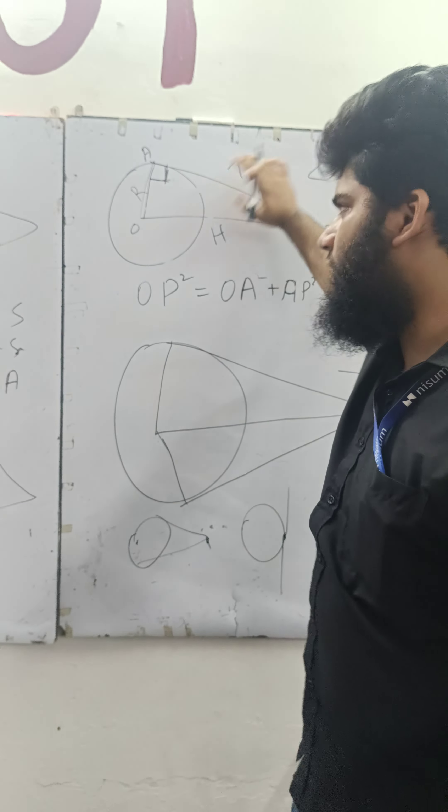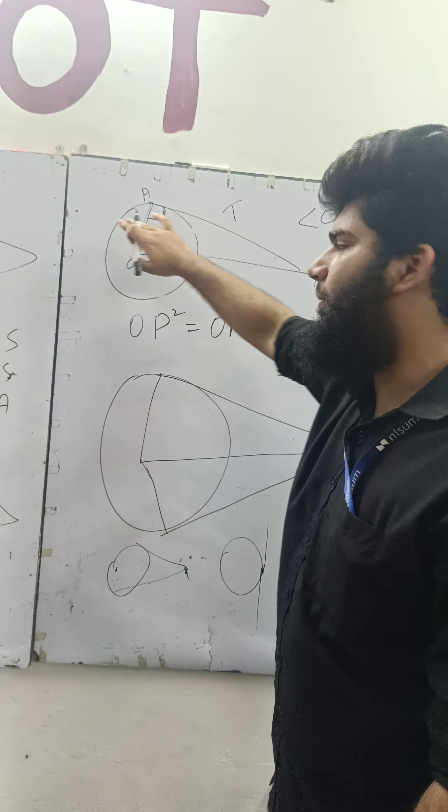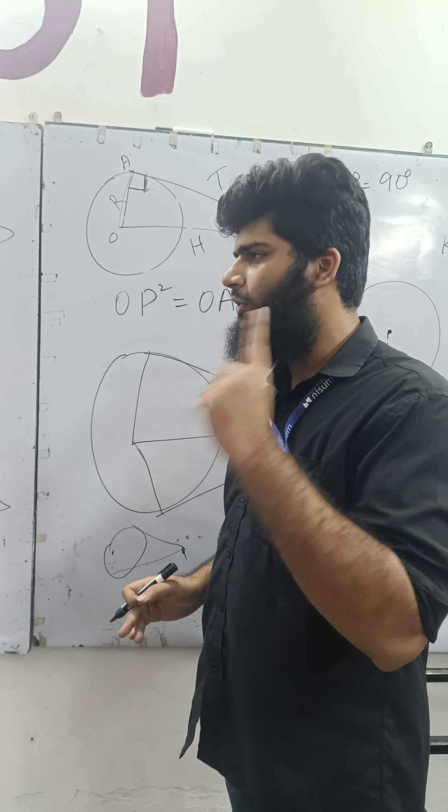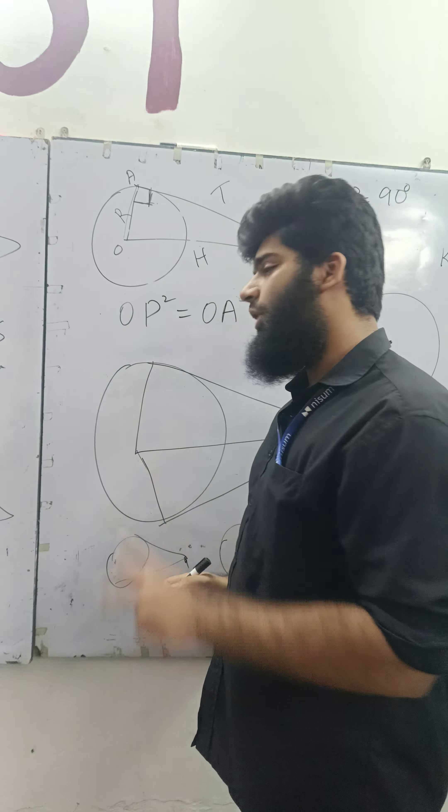This is your hypotenuse. So, if you want to write this theorem, hypotenuse square is equal to adjacent square plus opposite square. So, you can find the third value.